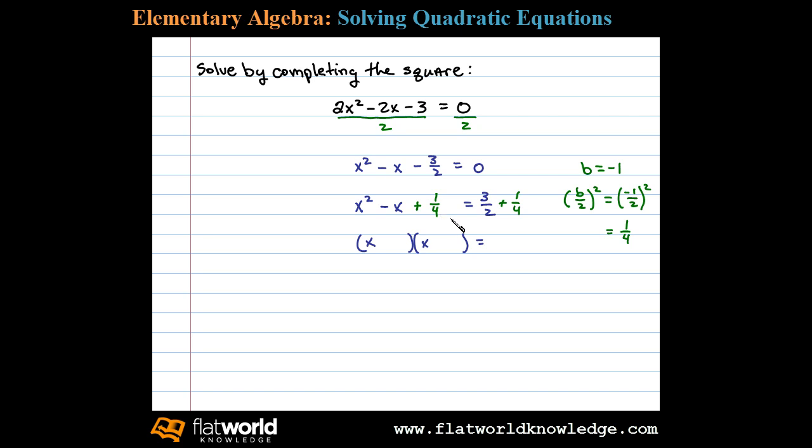1 half and 1 half add up to negative 1 if they're both negative, so we can write x minus 1 half times x minus 1 half. Notice here we have a perfect square trinomial.